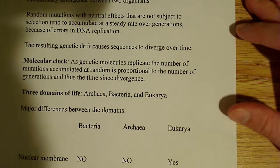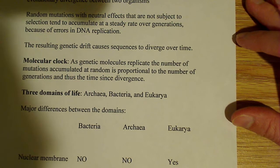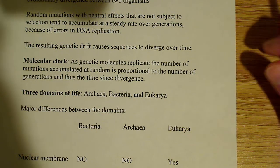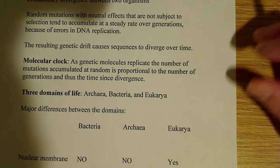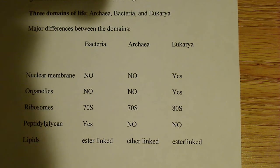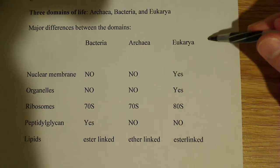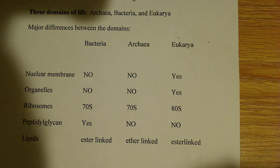That led to the three domains of life: Archaea, Bacteria, and Eukarya — all identified by Carl Woese, who was a very famous biologist. What I want to do here is show the major differences between the domains. I set up a chart and tried to find at least one unique property that each of these domains — Bacteria, Archaea, Eukarya — has.